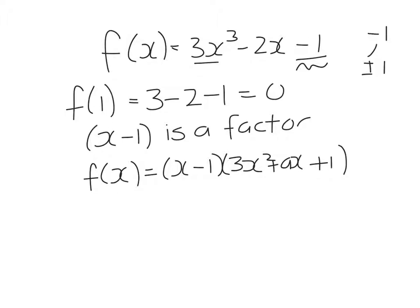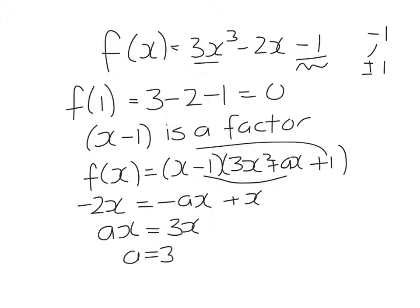And I have something in the middle which I'm going to call ax. I want to have minus two x, and this is going to come from minus one times ax, so minus ax, and x times plus one, which gives me that ax has to equal three x, so a is three. So when I factorize this I get x minus one times three x squared plus three x plus one.